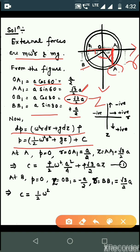After integrating, this value will be obtained. At the two points A and B, you have to find the condition and equate. The value of c: at A, pressure is zero, r value is OA1 which equals a by 2, and z value is root 3 by 2 a. Putting all values, the value of c is obtained, which is represented in equation number 1.